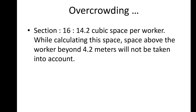Overcrowding should be avoided in the workplace. The government has already emphasized this, especially due to COVID-19 concerns. According to section 16, factories should allocate 14.2 cubic meters of space per worker. While calculating this space, anything above 4.2 meters above the worker will not be taken into account. This cubic space per worker should be allocated to avoid overcrowding and prevent accidents.